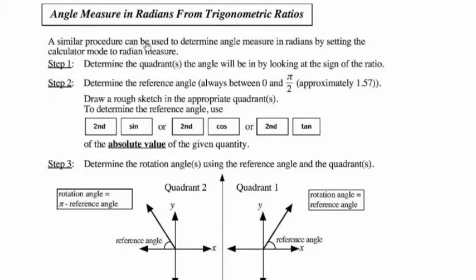Now that we've talked about angle measure in degrees from trigonometric ratios, we can also talk about angle measure in radians from trig ratios. A similar procedure can be used to determine the angle measure in radians as we did with degrees. All we need to do is set the calculator to radian measure.